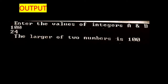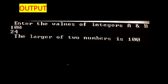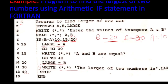Jaise isme GO TO 30 likh diya. Is program ki output dekho: output mein 'Enter value of integers A and B' dikhta hai. Do integers ki value A aur B ki enter karwani hai — WRITE statement ki help se ye write karwaya tha — to numbers enter karne hain. Maan lo do numbers enter karwaye 100 aur 24, to 'the larger of two numbers is 100' print hoke aa jaayega. Aap abhi tak teen IF statements ki hain — output teeno mein same aayegi, but jo unka syntax hai aur tarika hai unhe use karne ka, wo different hai. To aap inme se kisi ko bhi use karke program likh sakte hain.